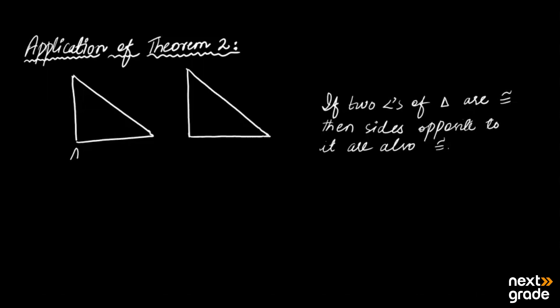As you can see here, take triangle ABC. In triangle ABC, if you say that side AB and side AC are congruent, then confirm that their opposite angles will also be congruent. The angle opposite to AB is angle C, and the angle opposite to AC is angle B. So if you mark these as angle 1 and angle 2, then angle 1 and angle 2 are congruent.